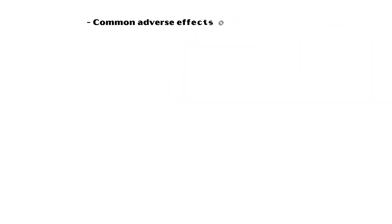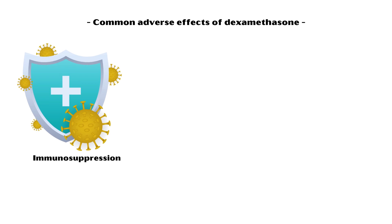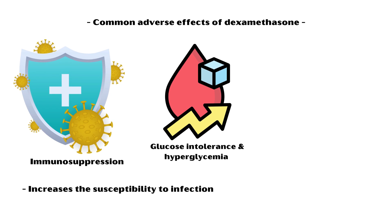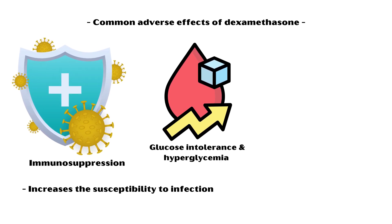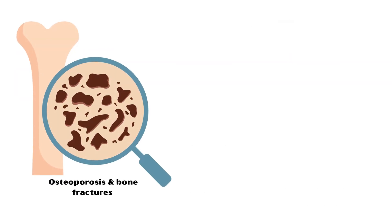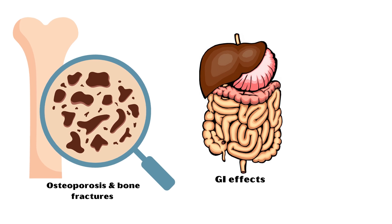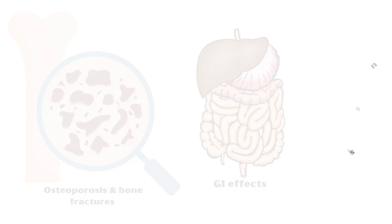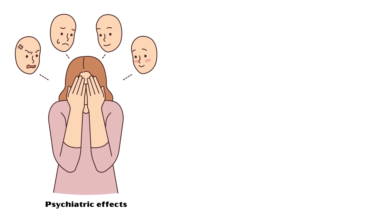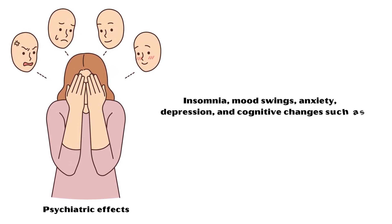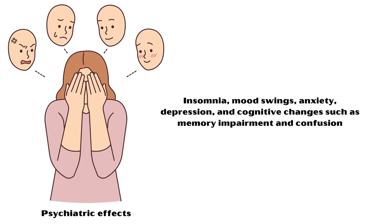Common adverse effects of dexamethasone include the following. Immunosuppression, which increases the susceptibility to various infections. Glucose intolerance and hyperglycemia. Fluid and electrolyte imbalances. Osteoporosis and bone fractures. Gastrointestinal effects, including gastric irritation, peptic ulcers, and pancreatitis. Psychiatric effects, including insomnia, mood swings, anxiety, depression, and cognitive changes, such as memory impairment and confusion.